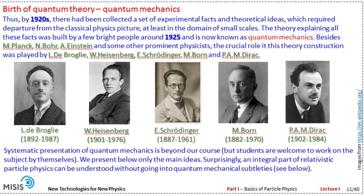The new theory came in 1925 — now known as quantum mechanics — created by many bright people. Besides Planck, Bohr, and Einstein, you can see here Louis de Broglie, Werner Heisenberg, Erwin Schrödinger, Max Born, Paul Dirac among the main creators. A systematic presentation of quantum mechanics is not the aim of this course, though everyone is welcome to learn as much as they can. Fortunately, an integral part of relativistic particle physics can be understood without going into the subtle details of quantum mechanical behavior — and we will explain why later.